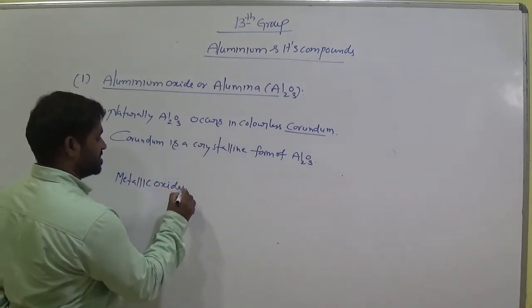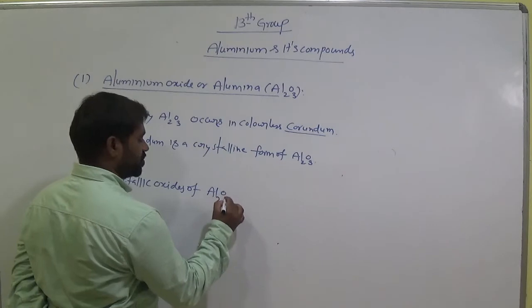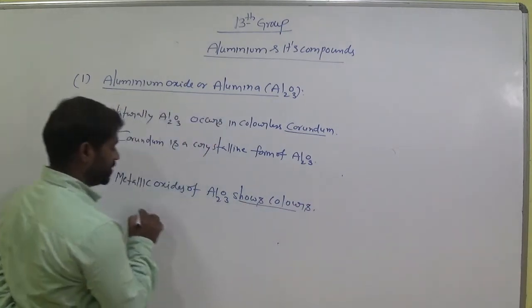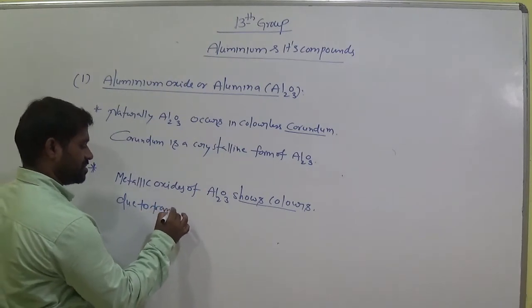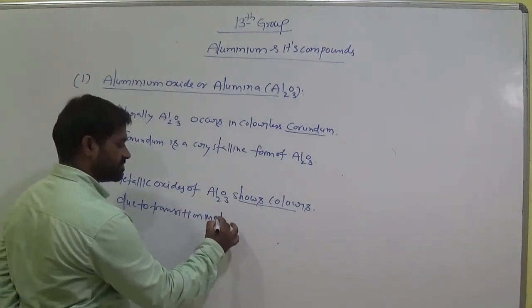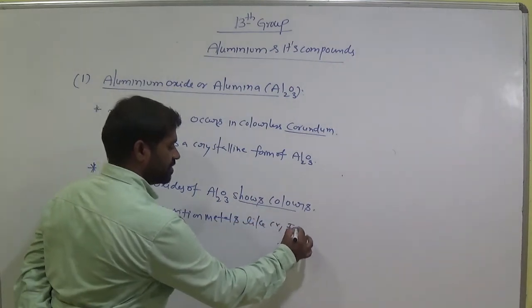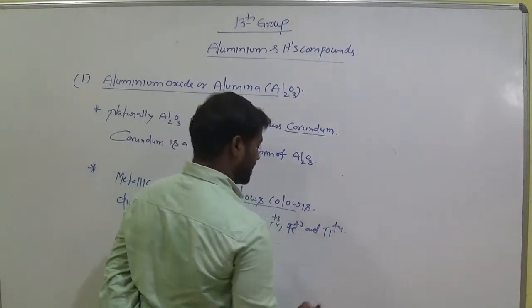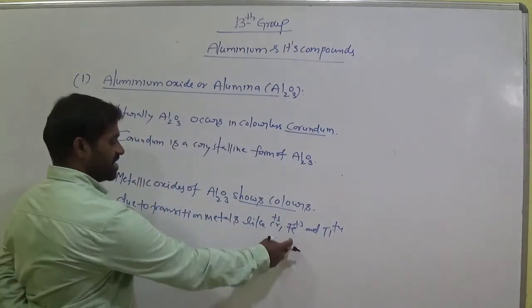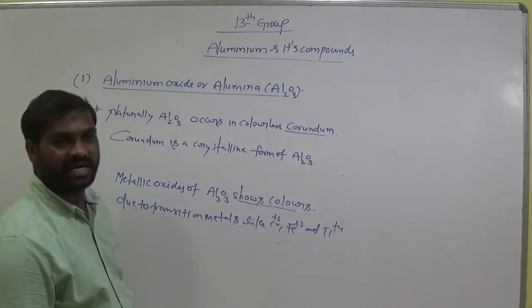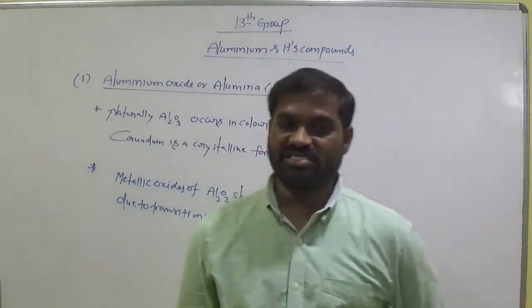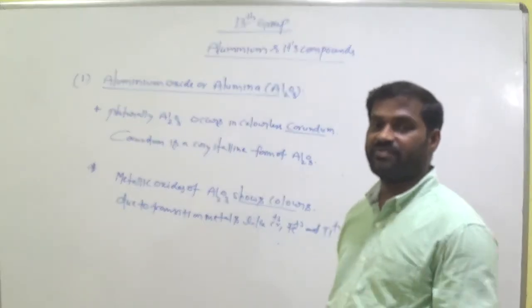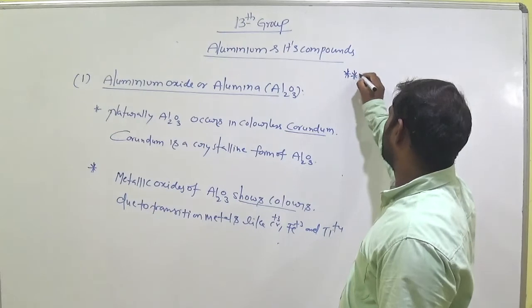Metallic oxides of Al₂O₃ shows colors due to transition metals like Chromium, Iron and Titanium. Chromium plus 3 ions, transition metal ions. Due to these ions, these oxides shows different different colors. Originally Al₂O₃ is a colorless white crystalline solid, but when it is interactive with Chromium and Titanium and these transition metals, they shows different different colors.